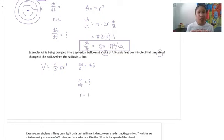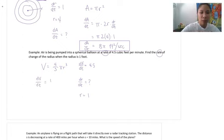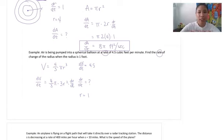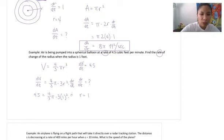Let's find the derivative of our equation and then plug in everything we know. If our equation is V equals 4/3 pi r cubed, the derivative of V gives dV/dt. The 4/3 pi is all just a constant, so the constant multiplier rule says it stays there. The derivative of r cubed gives 3r squared, and we need dr/dt at the end because we're taking a derivative of a non-t variable.